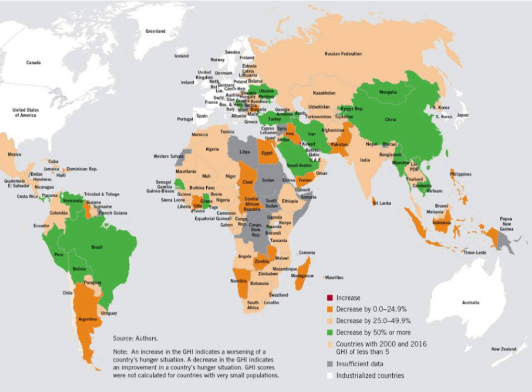IFPRI is a partner in Compact 2025, a partnership that develops and disseminates evidence-based advice to politicians and other decision-makers aimed at ending hunger and undernutrition in the coming 10 years. The Compact 2025 uses GHI data.